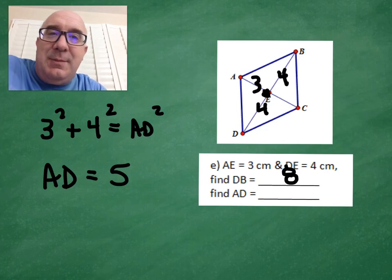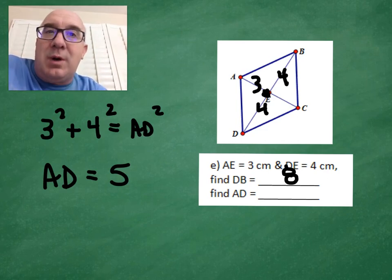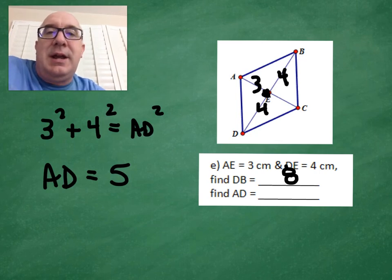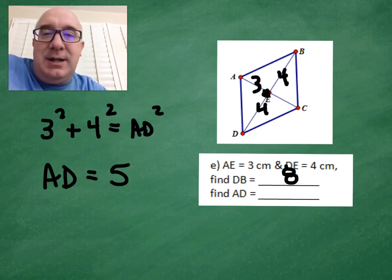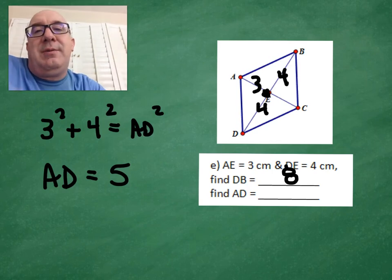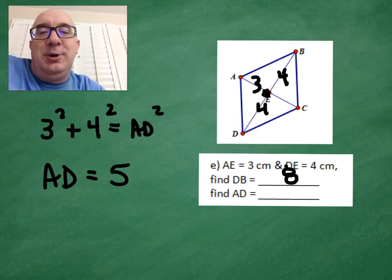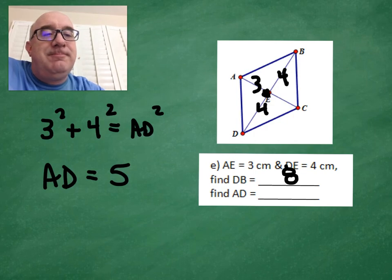I've always warned you: be careful when dealing with shapes like rhombus, rectangle, and square, because there are ninety-degree angles in there. They're going to use the Pythagorean theorem or something ninety-degree related to see if you're watching and paying attention.